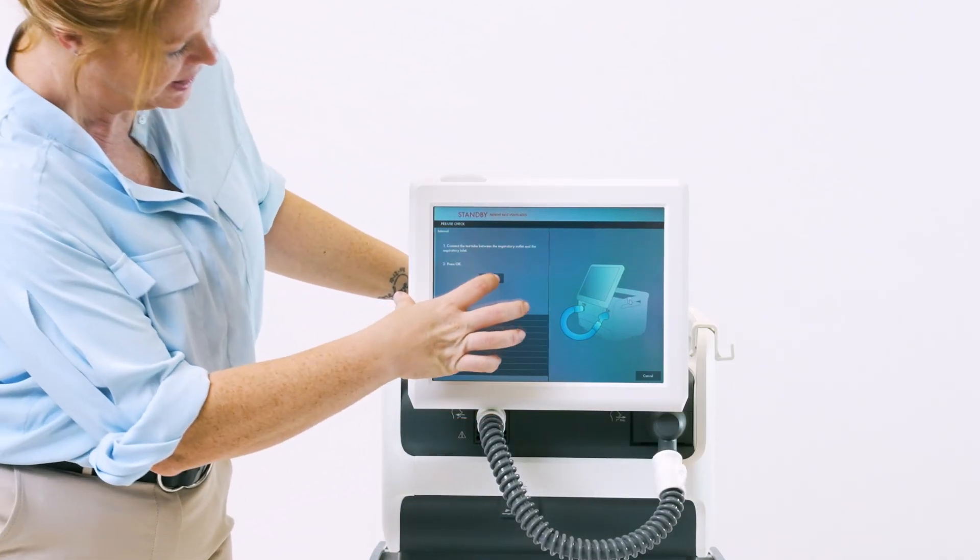Once that's completed, hit OK to start the testing. The pre-use check includes tests and measurements, including flow and pressure transducer calibrations.